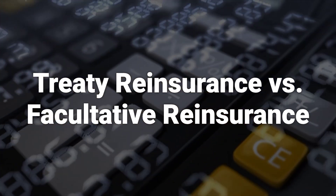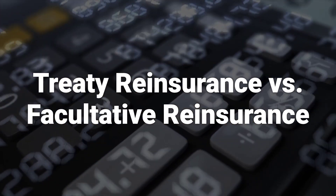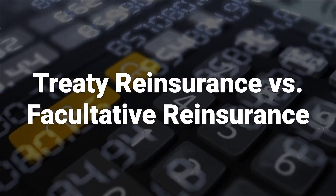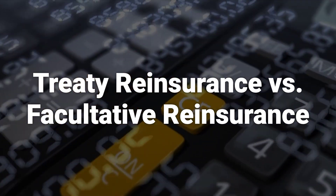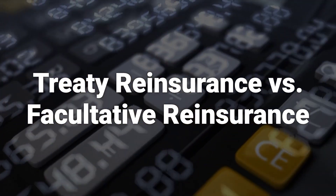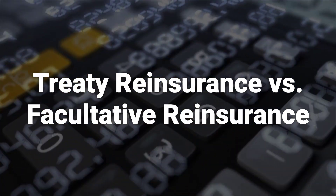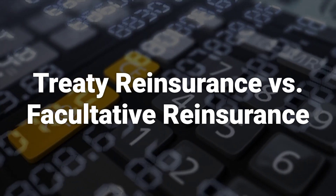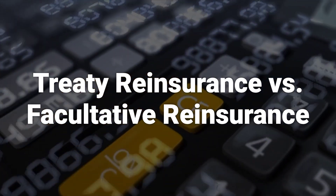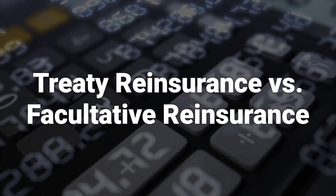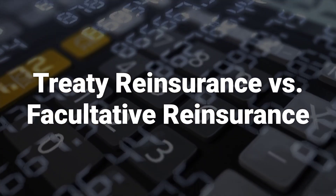Treaty reinsurance is a broad agreement covering some portion of a particular class, while facultative reinsurance contracts are much more focused in nature. They cover individual underlying policies and are written on a policy-specific basis.